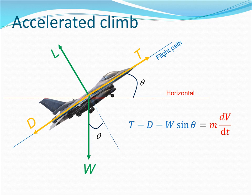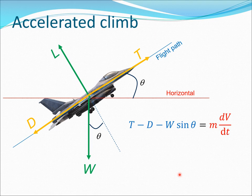In accelerated climb, we have the same diagram, but now in the direction of the flight path: T minus D minus W sine theta equals m dV/dt. We have applied Newton's law of motion and assumed that acceleration is present. Recall that acceleration is dV/dt, and m is the mass, so mass times acceleration equals the net force along the flight path. We will now examine this equation to understand the accelerated climb situation.